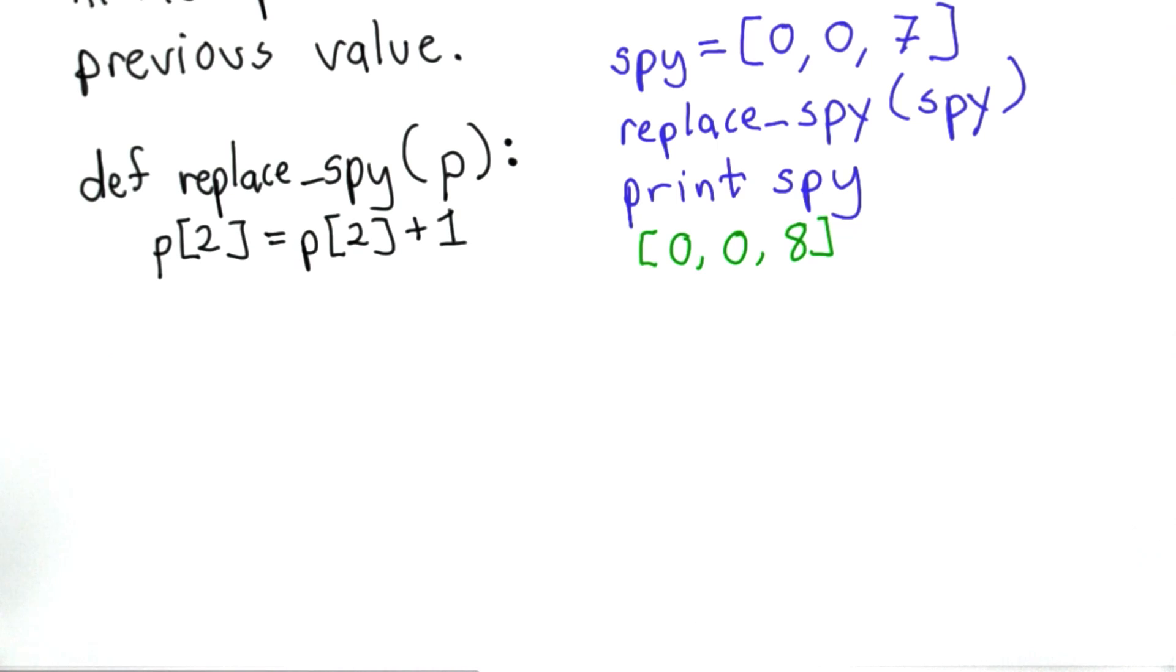For the body of replaceSpy, what we want to do is change the value in position 2 of the value passed in. So we can do that with an assignment statement. On the left side, we're selecting the cell, and we're replacing it with a value that we get from the old value in that position, plus 1.